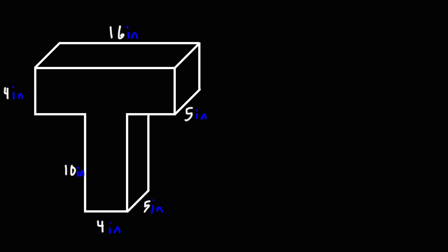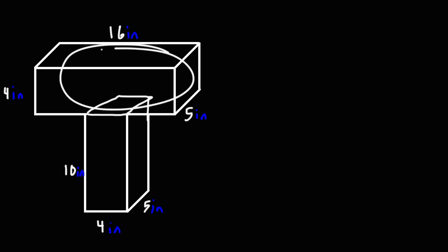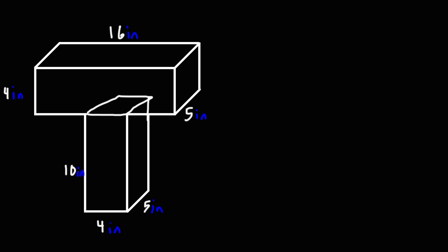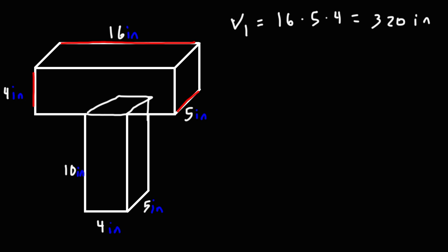Now let's move on to our fourth example. I'm going to separate it into two composite figures. For the first rectangular prism, we can see that we have a length of 16, a width of 5, and a height of 4. So V1 is length times width times height. 5 times 4 is 20, 20 times 16 is 320. So that's going to be 320 cubic inches.